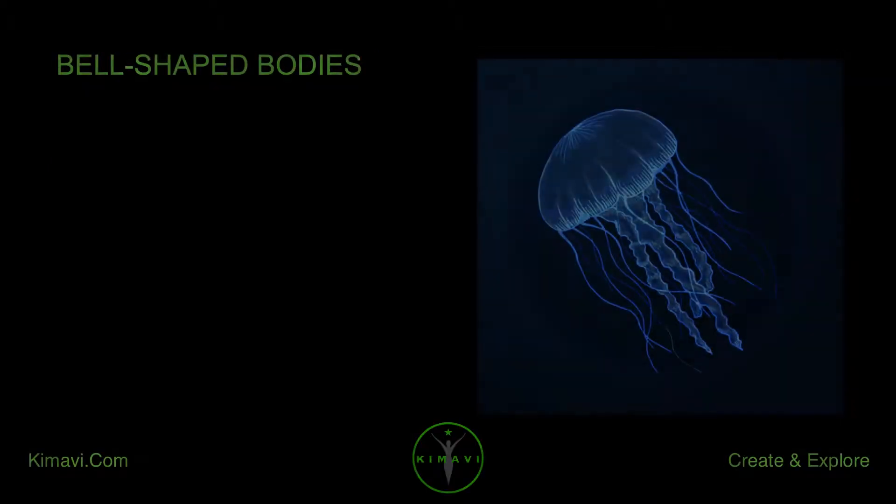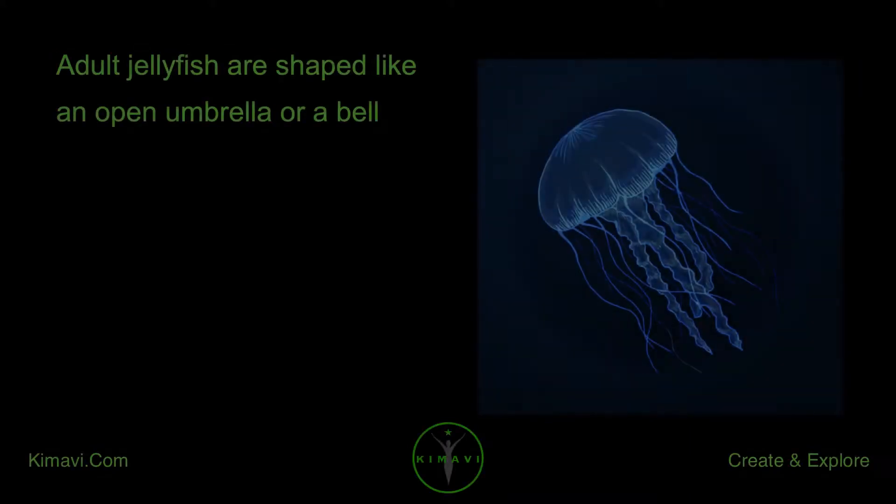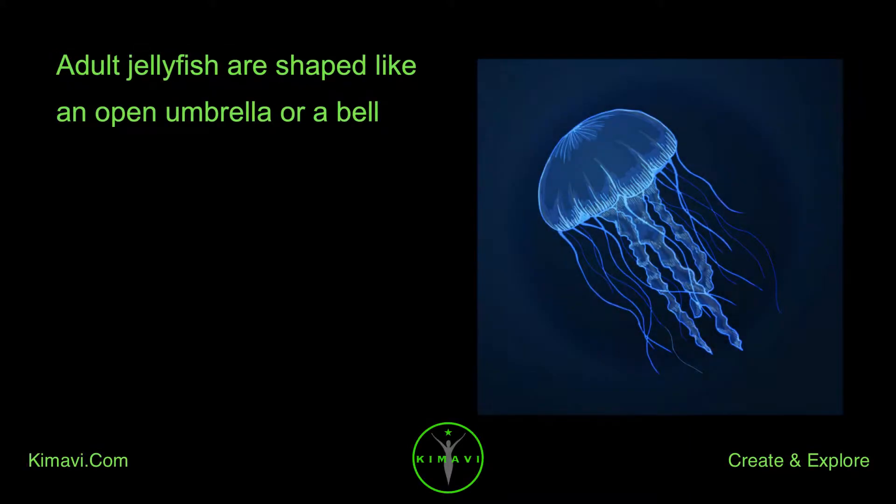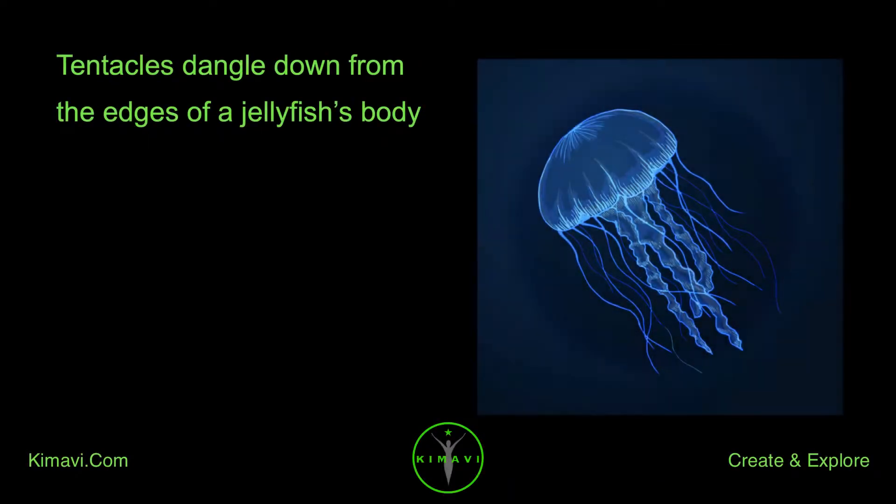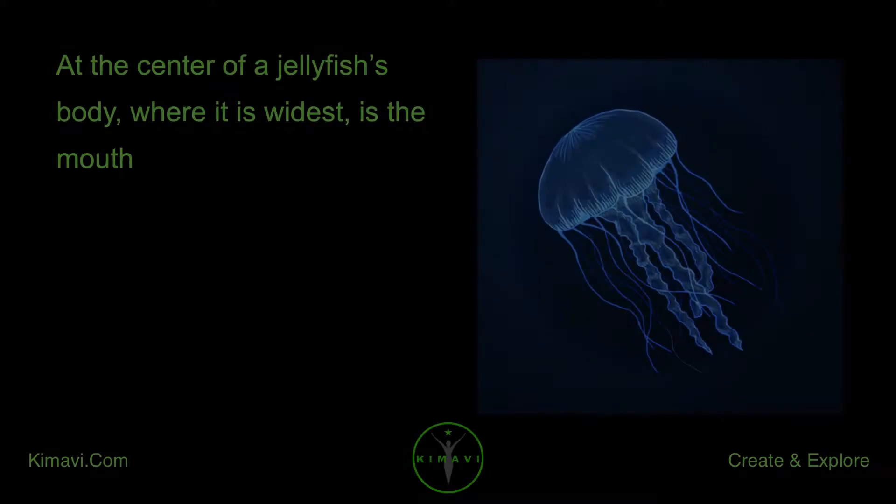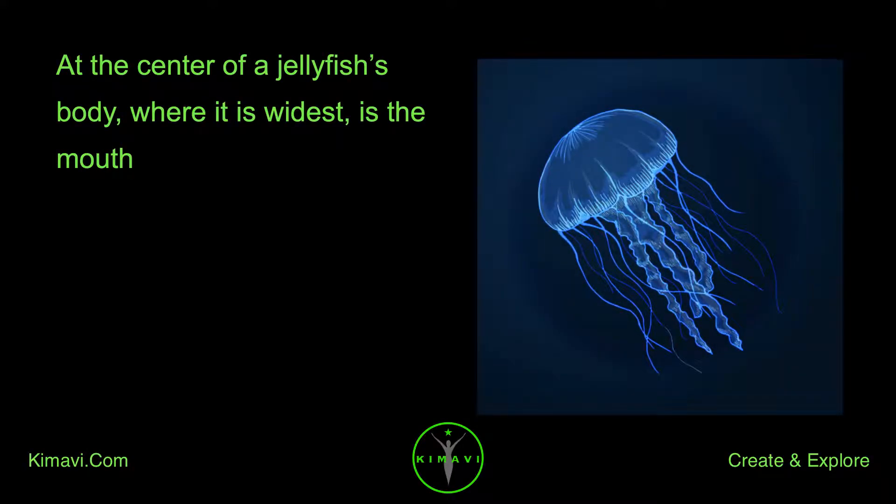Adult jellyfish are shaped like an open umbrella or a bell. Tentacles dangle down from the edges of a jellyfish's body. At the center of a jellyfish's body, where it is widest, is the mouth.